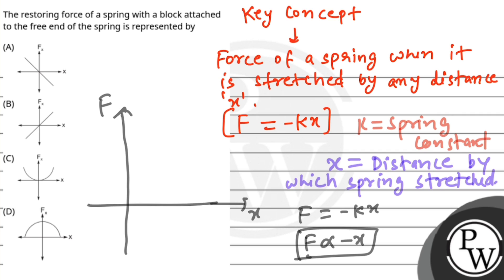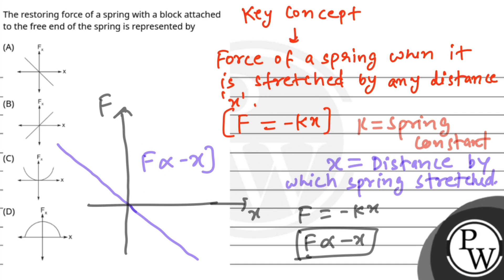But f is directly proportional to minus x, so the straight line graph will be on the negative side and the slope will be negative. The graph will represent f is directly proportional to minus x, and this is what we have to show.